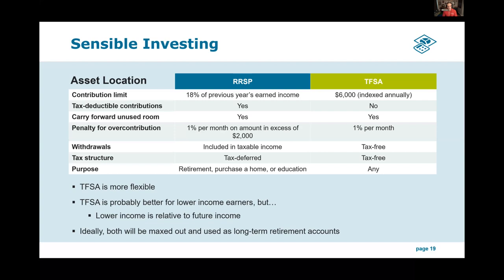The TFSA is kind of like the inverse of the RRSP. With the RRSP, you're effectively making contributions with pre-tax income. With the TFSA, you're making contributions with after-tax income — you earn your income, pay income tax, and those after-tax dollars go into the TFSA. When you make a withdrawal in the future, you don't pay tax. If your tax rate is identical now and at the time of withdrawal, the RRSP and TFSA give you the exact same after-tax result. If your tax rate is lower in the future, the RRSP gives you a better result.